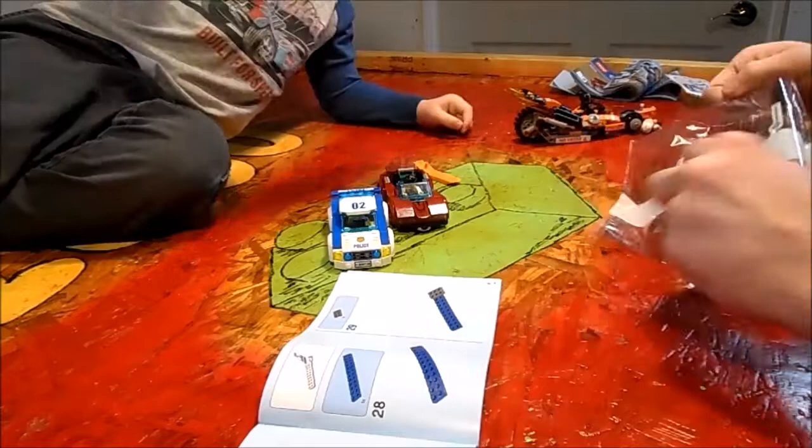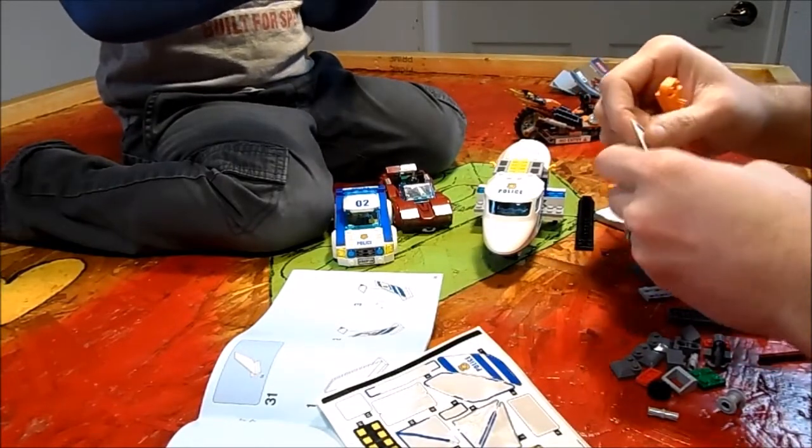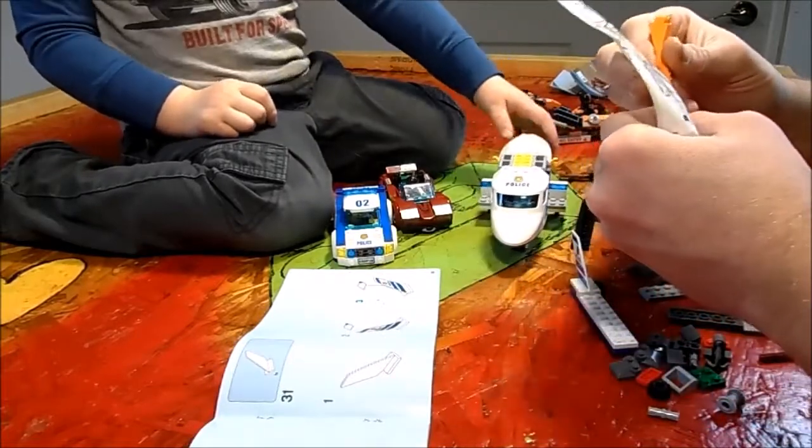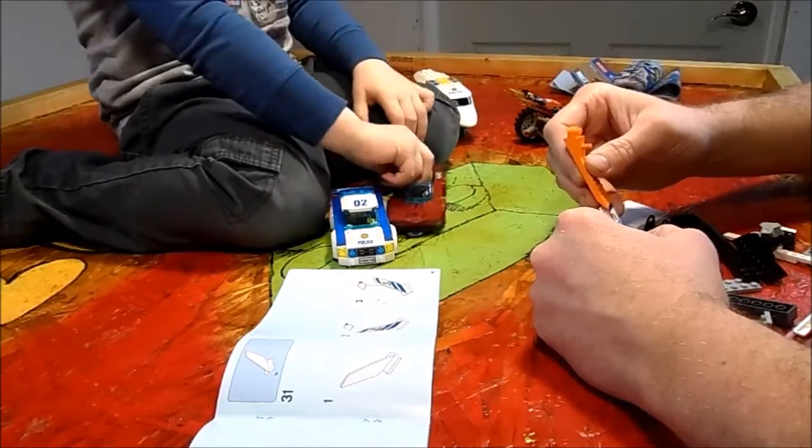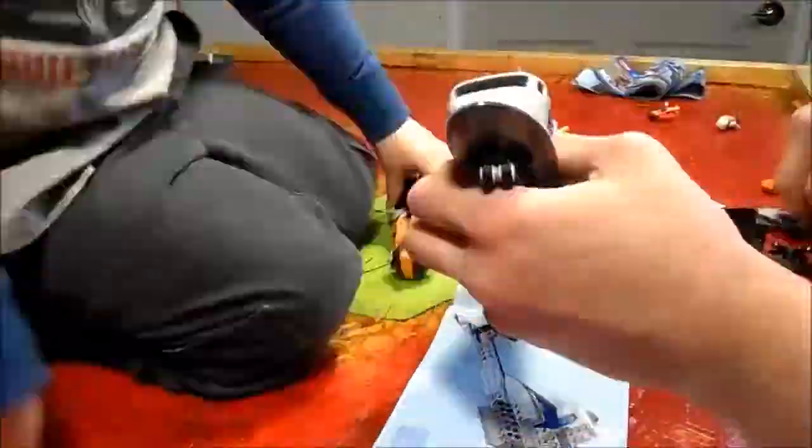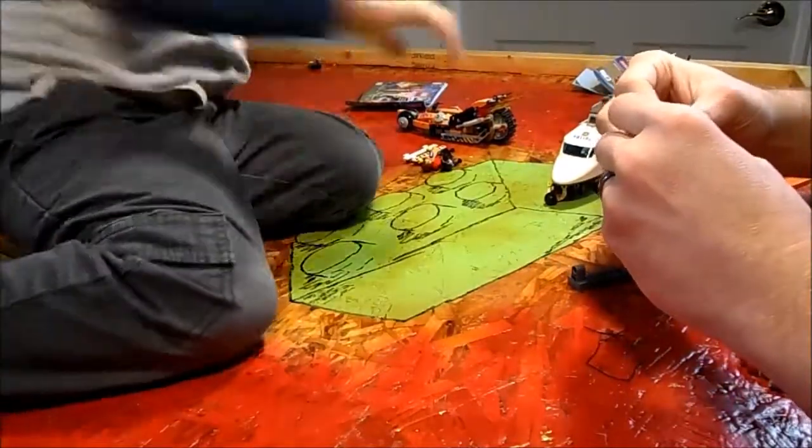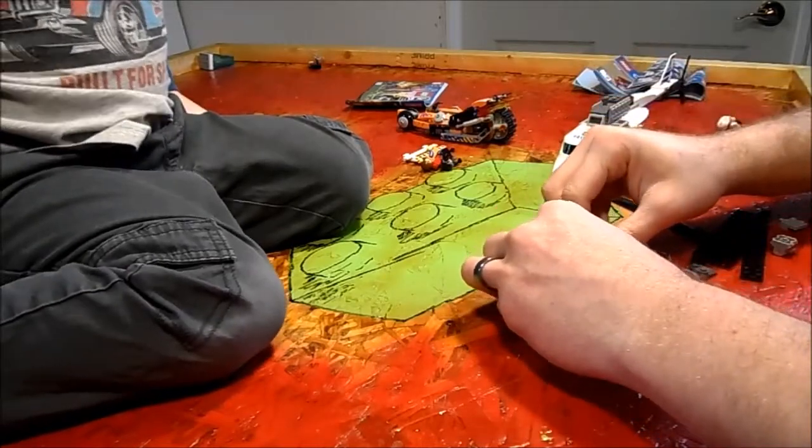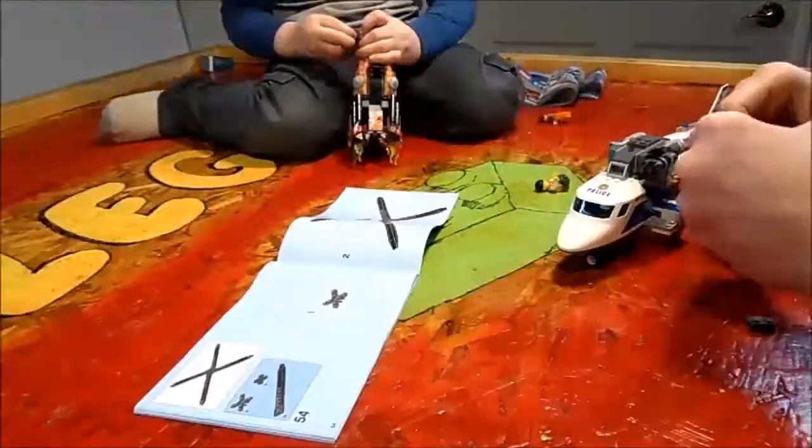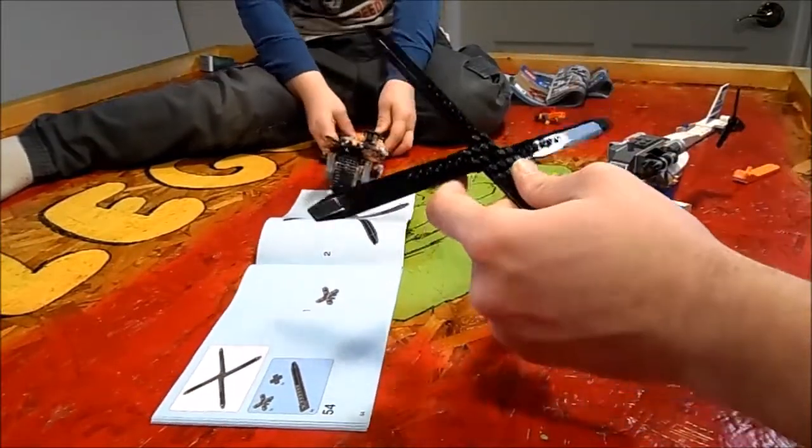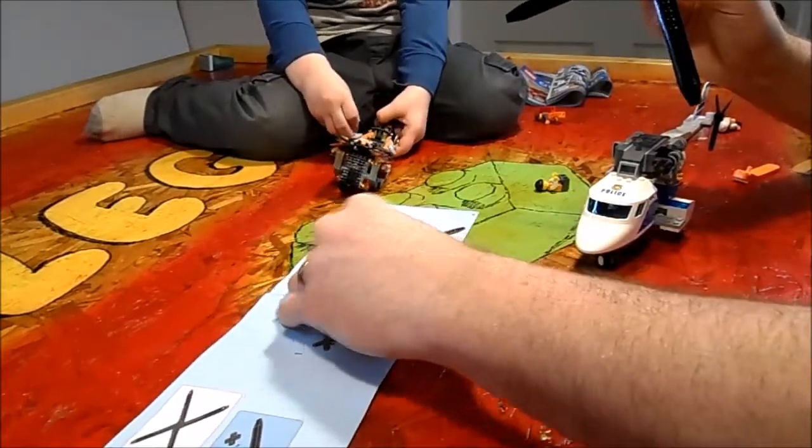There's a tail rotor that counterbalances the torque from the main rotor so the helicopter doesn't just spin in the air. These rotor blades are a fairly new thing, definitely new to me, definitely much more akin to a helicopter rotor than just a regular flat piece, just kind of what we used to get.